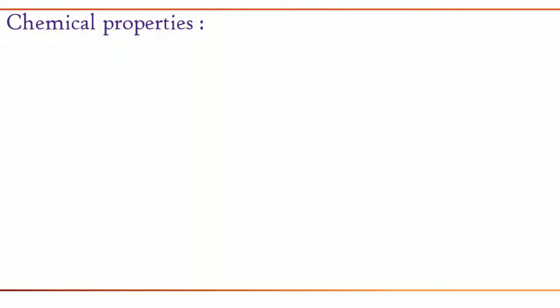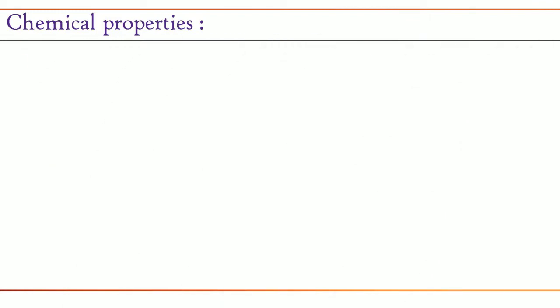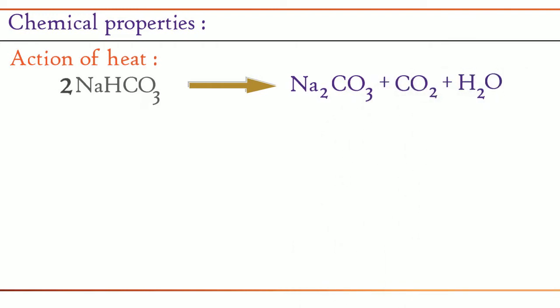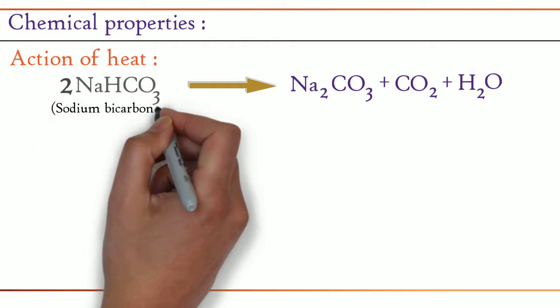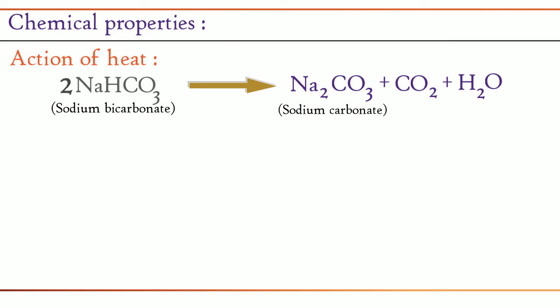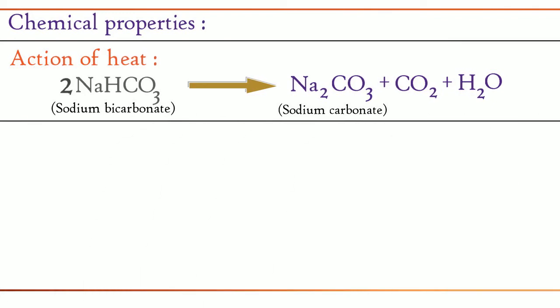Now let us see the chemical properties. First one, action of heat: 2 NaHCO3 gives Na2CO3 + CO2 + H2O. On heating, sodium bicarbonate decomposes into sodium carbonate, carbon dioxide, and water.